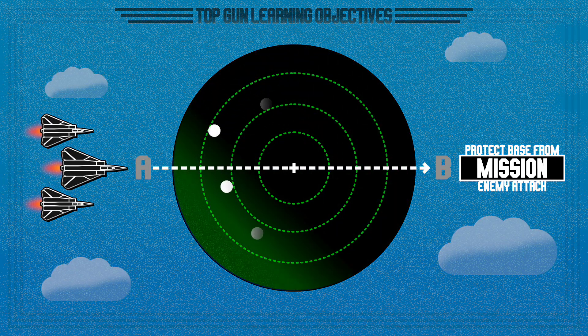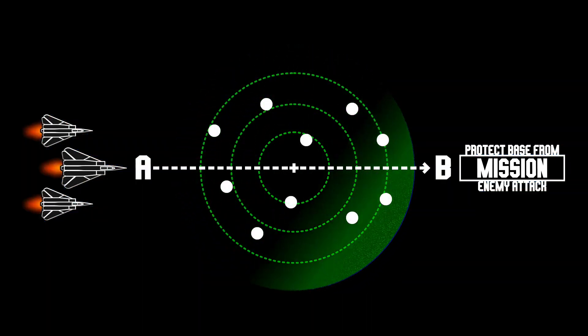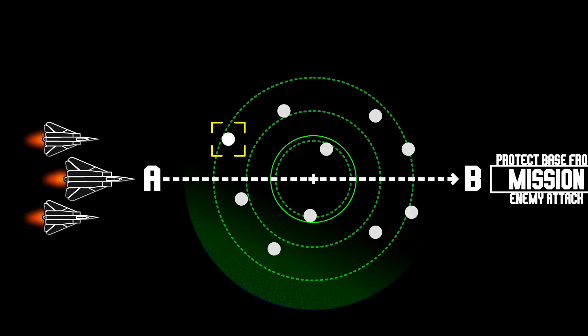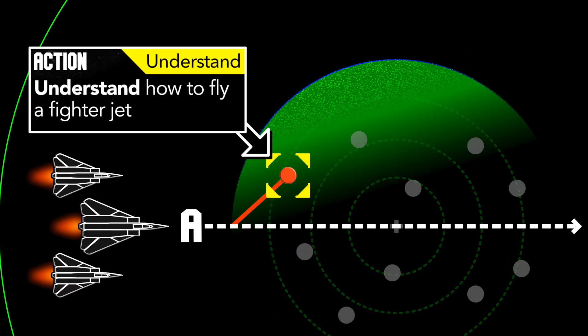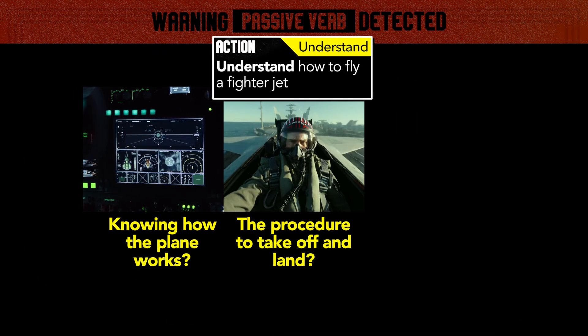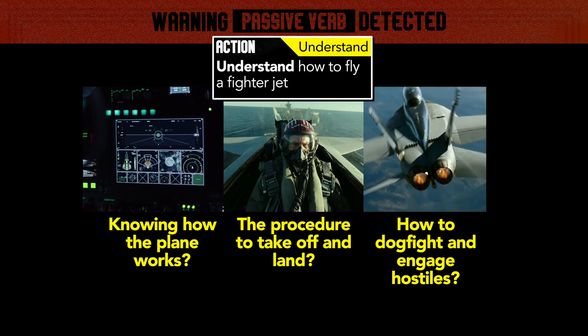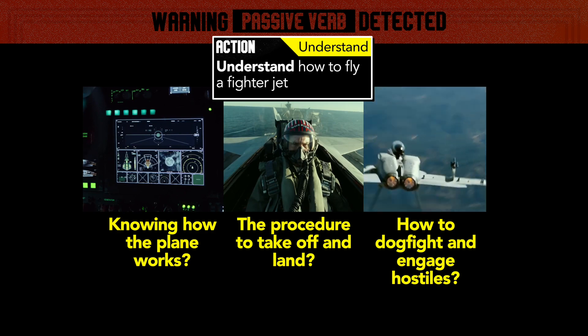Every mission requires a set of skills to complete. If we tell our cadets that in order to complete this mission they must first understand how to fly a fighter jet — what does that actually mean? Knowing how the plane works, the procedure to take off and land, how to dogfight and engage hostiles.